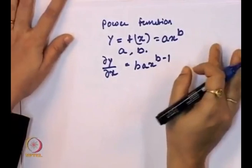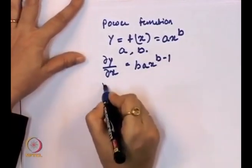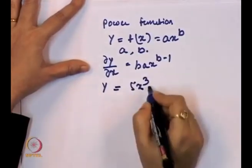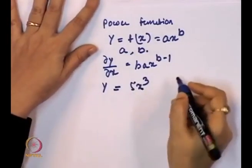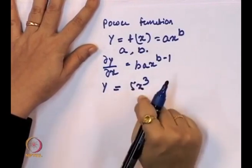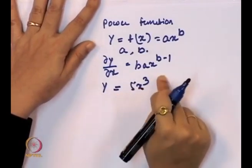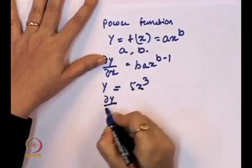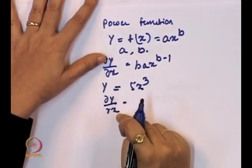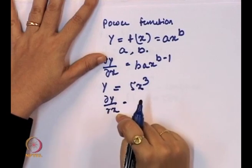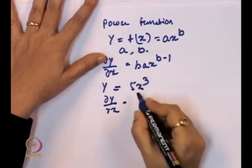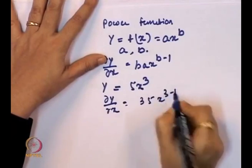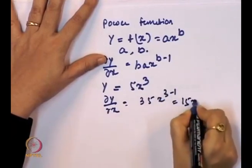Let us give a number to this functional form. Suppose y = 5x³. In this case, dy/dx = 3·5·x^(3−1) = 15x². Similarly, take y = 4x². Then dy/dx = 4·2·x^(2−1) = 8x.